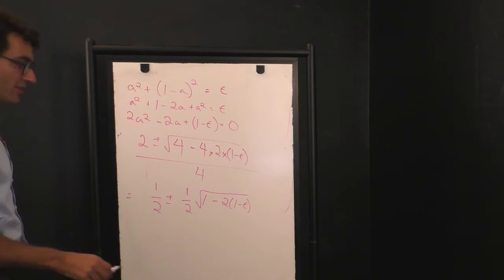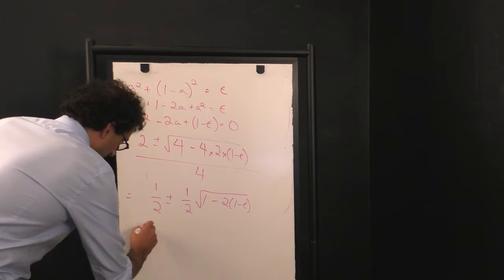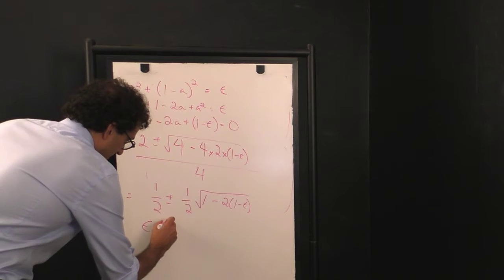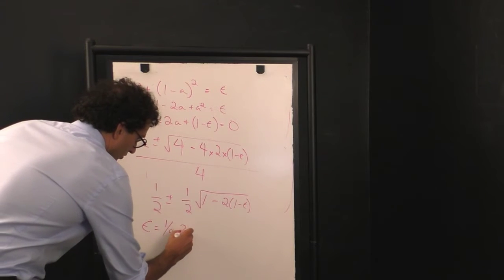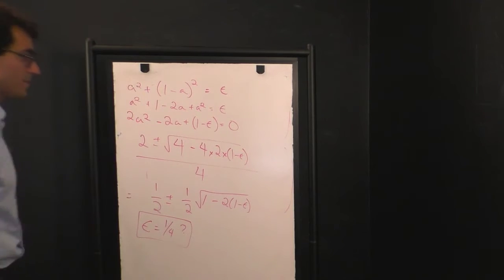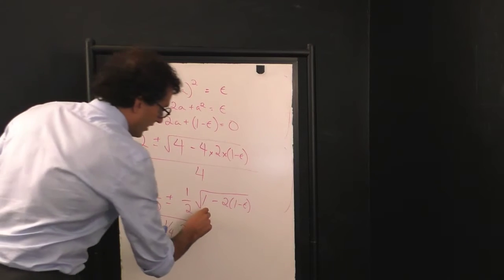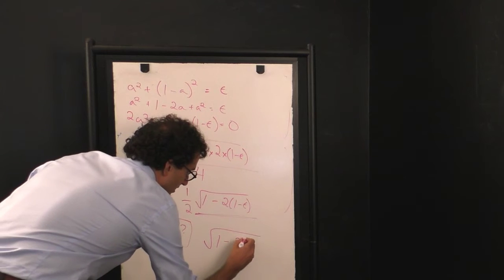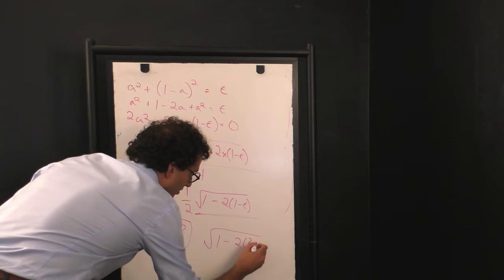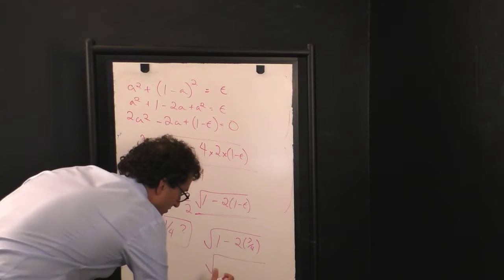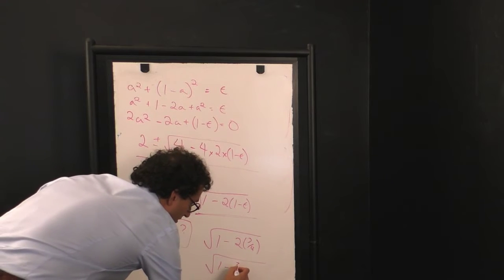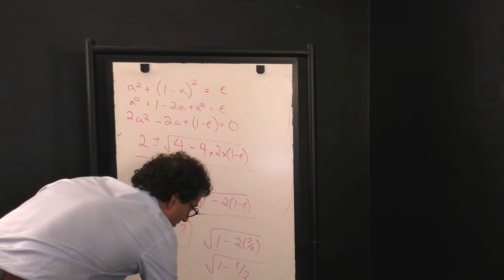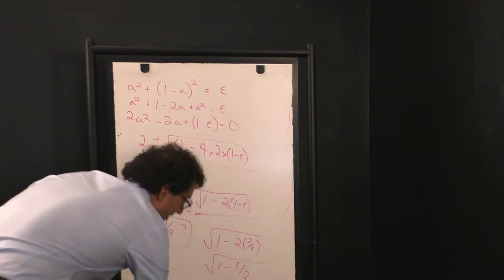What I'd like you to notice is what happens when, let's say, epsilon is equal to a quarter. In this case, under the square root sign here, we have the square root of 1 minus 2 times 3 over 4, which is equal to 1 minus 3 over 2, which is equal to minus 1 half.